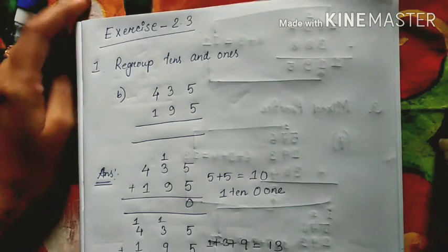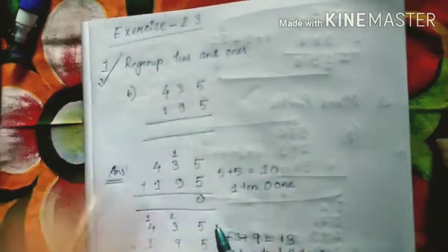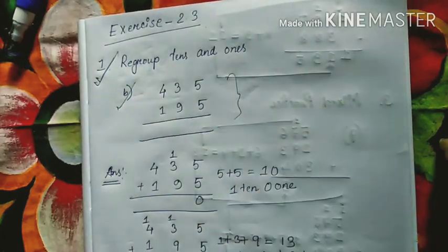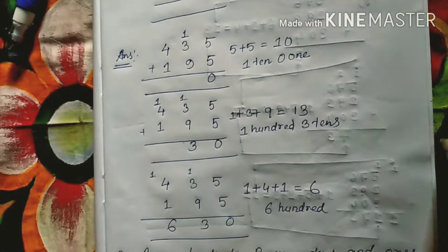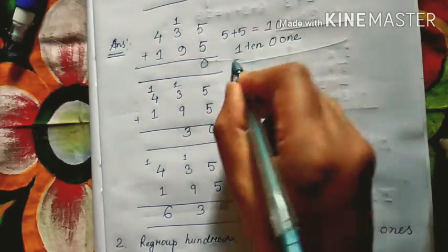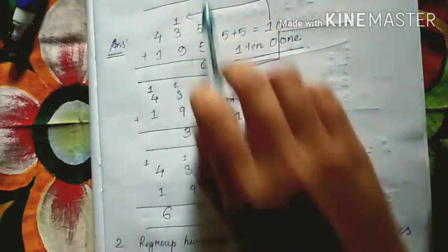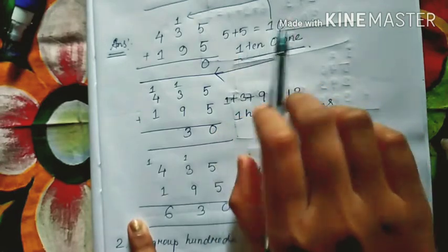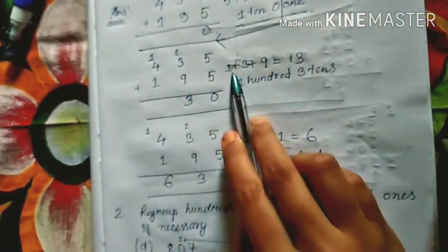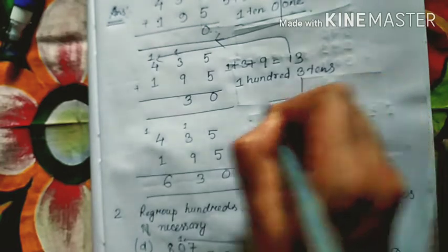Whatever we have discussed will help us to solve Exercise 2.3. The first question says: regroup tens and ones. I have solved part (b). Stepwise we have to write, or you can directly show it with arrows. First we solve the ones place: 5 plus 5 equals 10, so 1 ten and 0 ones — write 0 in the ones place. This 1 is carried to the tens place; adding the tens gives 13, so 1 carries over and 3 goes in the tens place.